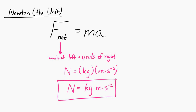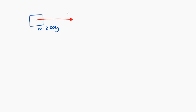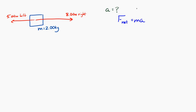Now let's try applying this to a couple of different examples. Let's say I have an object with a mass of two kilograms, and I apply two forces to that object: eight Newtons to the right and five Newtons to the left. I want to know what the acceleration of the object is. Using Newton's second law, I need to know the net force and the mass. Using right as positive and left as negative, the net force is eight Newtons plus negative five Newtons, which is three Newtons.